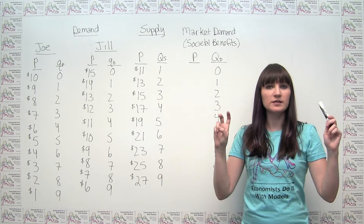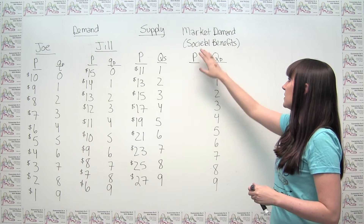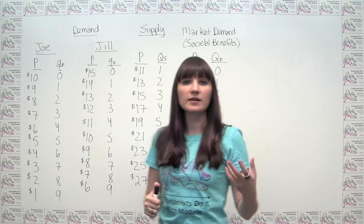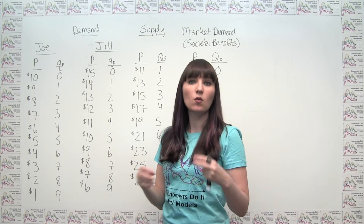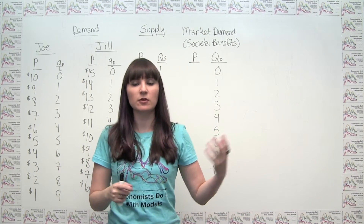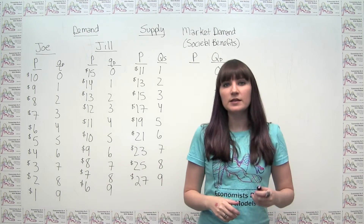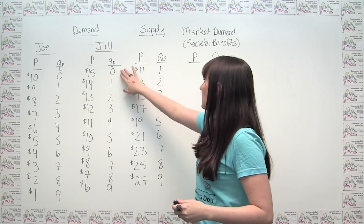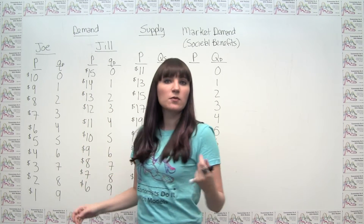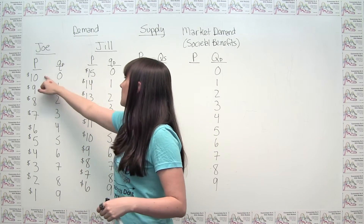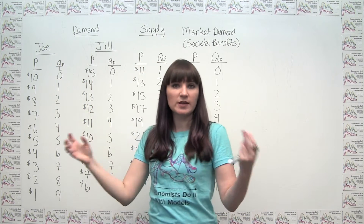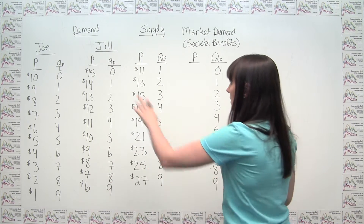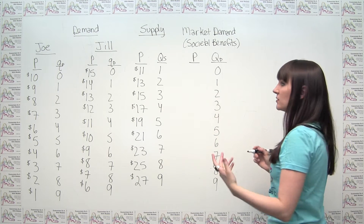So we can make a market demand curve here, measuring the amount of societal benefit created for each acre of park. The societal benefit should be the collective willingness to pay, because people are willing to pay their valuation — the benefits they get from consuming the item. I'm going to line up the quantities from 0 to 9, since each individual has quantities from 0 to 9, and then for each quantity add the willingness to pays of the two individuals. It doesn't really make sense to add for 0 acres, but we'll do it anyway — we get $25.